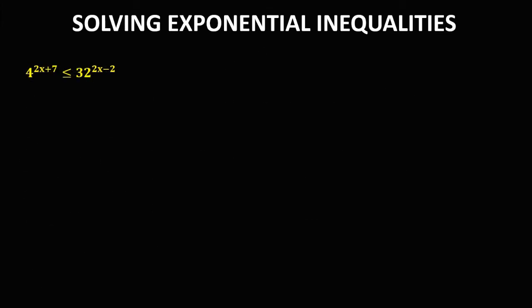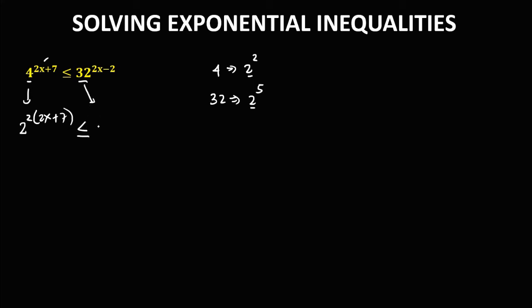For the next problem, we again need to rewrite the equation with the same base. The given bases are 4 and 32. We can rewrite 4 as 2 to the power of 2, and 32 as 2 to the power of 5. So the common base is 2. We rewrite: 2 squared times (2x plus 7), less than or equal to 2 to the power of 5 times (2x minus 2).